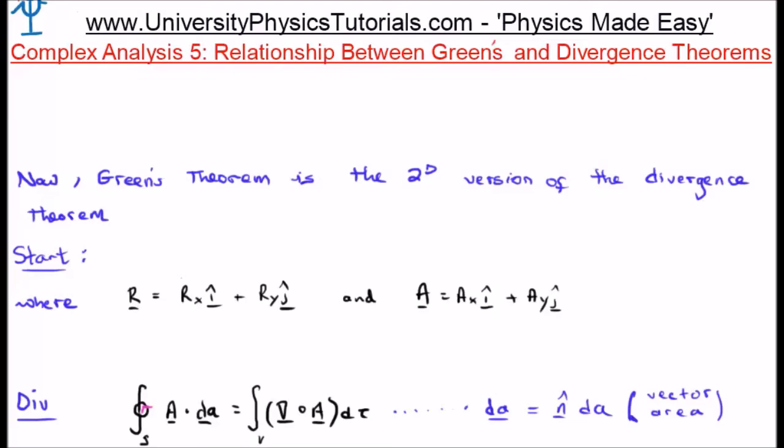Let's suggest we are dealing with the vector field capital R in two dimensions R sub x i hat plus R sub y j hat and the vector field capital A which is A sub x i hat plus A sub y j hat.